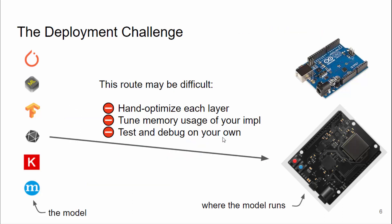A fast implementation may already exist for each layer. Tools may already exist to translate the model graph into C, and you may have a robust set of test and debug tools to validate the model you're using on device. But another route may be very difficult — you may have to find a hand-optimized implementation for each layer and do some graph-level work, such as tuning the memory usage of your implementation.